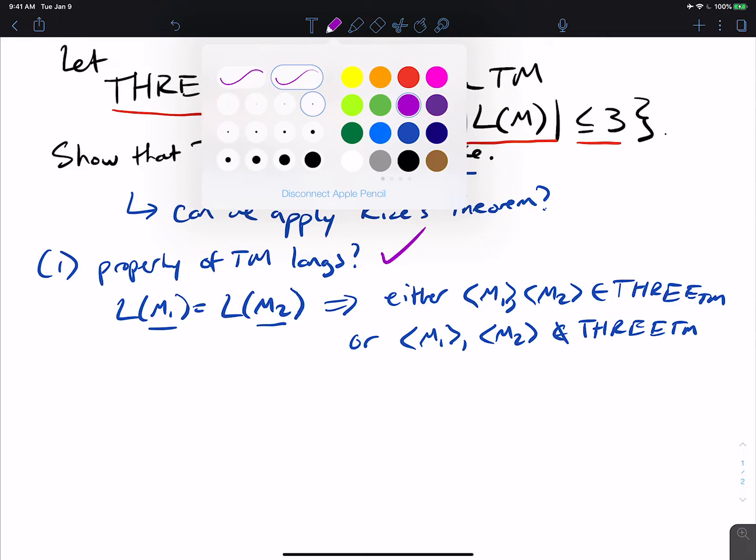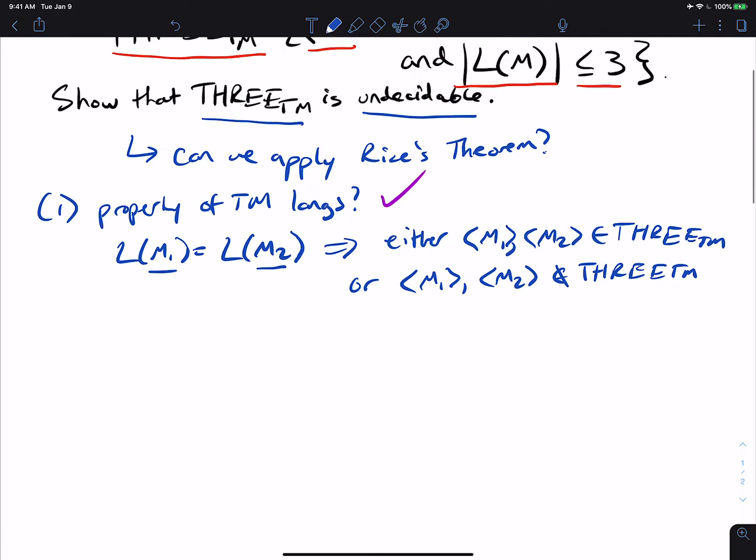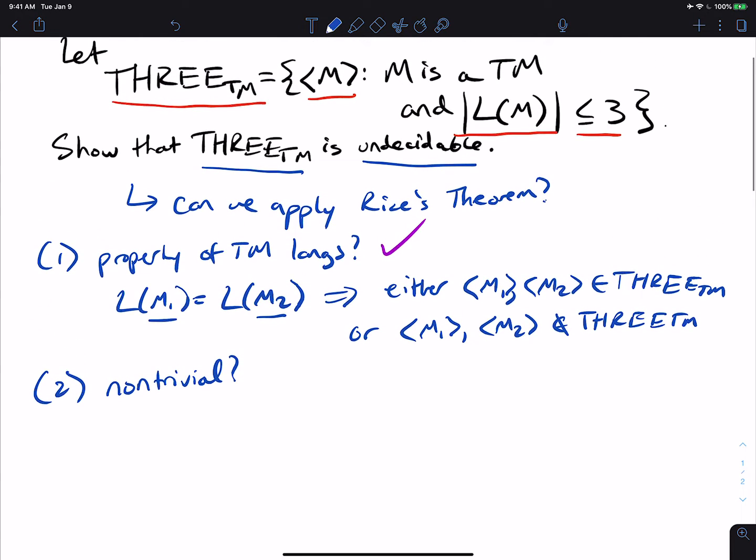Now, the other thing that students sometimes forget is, is this a non-trivial property? So is this property non-trivial? So that means, is there a Turing machine inside 3TM? And is there a Turing machine that's outside 3TM?